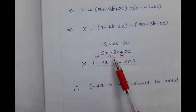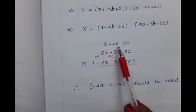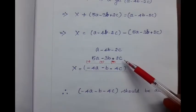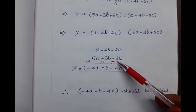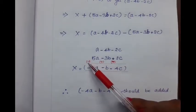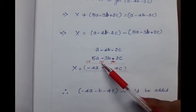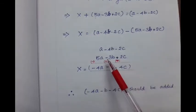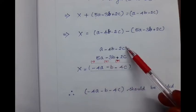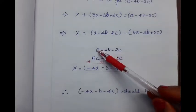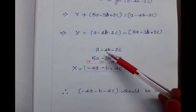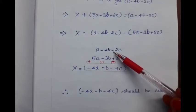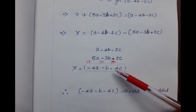For subtracting, we write it out. Before subtracting the second expression from the first, we should change its sign: plus 5a becomes minus 5a, minus 3b becomes plus 3b, plus 2c becomes minus 2c. After changing the sign of the second expression, we add both expressions. Adding a with minus 5a we get minus 4a. Adding minus 4b with plus 3b we get minus b. Adding minus 2c with minus 2c we get minus 4c.